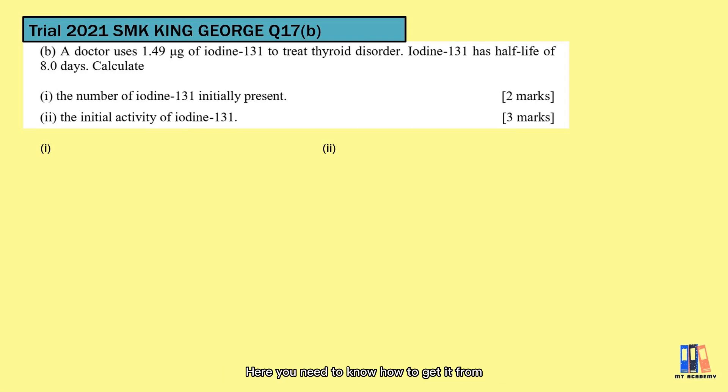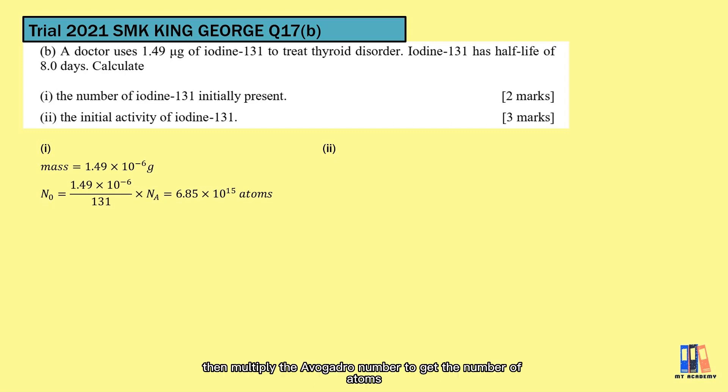Here we need to know how to get it from the mass and the molecular mass given. The number of atoms is equal to the mass divided by molecular mass, which gives you the number of moles. Then multiply the Avogadro number to get the number of atoms. The answer here is 6.85 × 10^15 atoms.